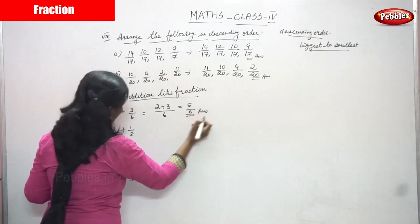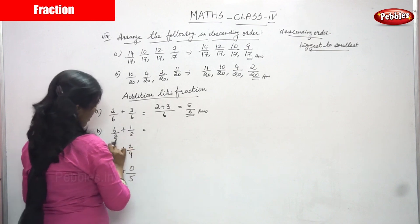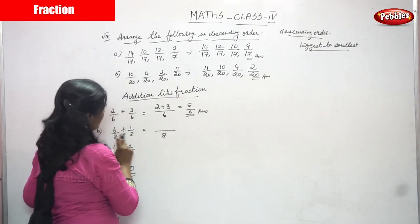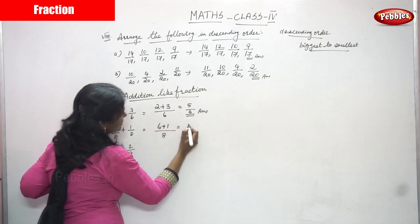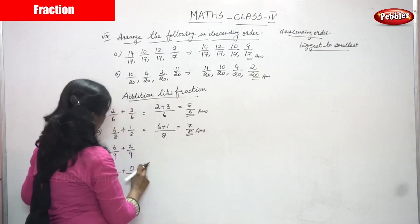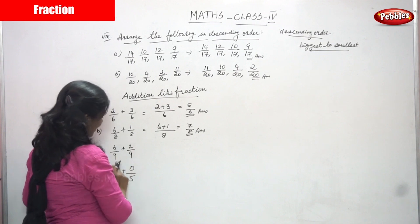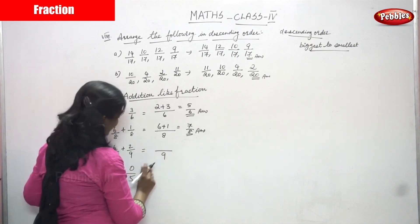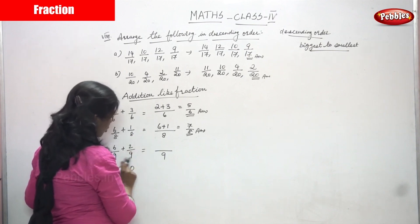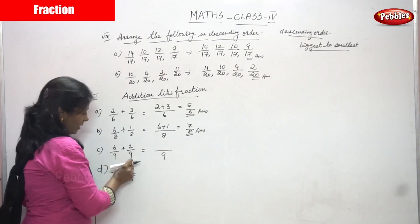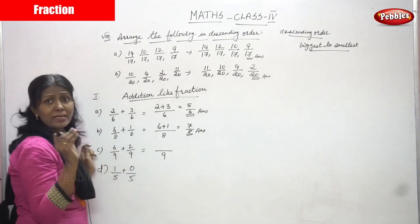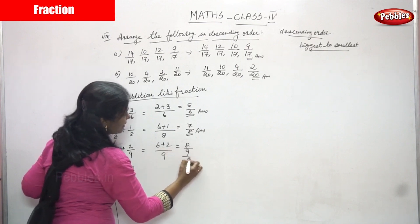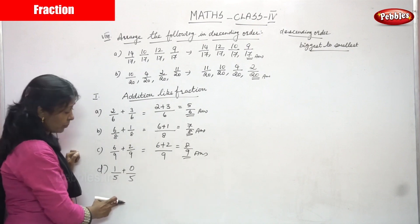So 2 by 6 plus 3 by 6 — all denominators are the same, so write the denominator one time and add the numerators: 2 plus 3 equals 5, so the answer is 5 by 6. Next: 6 by 8 plus 1 by 8 — denominators are the same, add the numerators: 6 plus 1 equals 7, so the answer is 7 by 8. Next: 6 by 9 plus 2 by 9 — denominators are the same, add the numerators: 6 plus 2 equals 8, so the answer is 8 by 9.